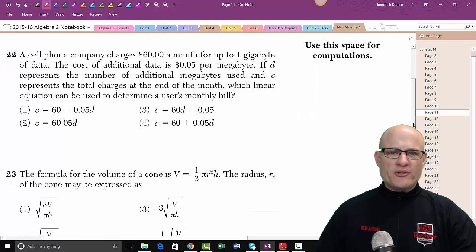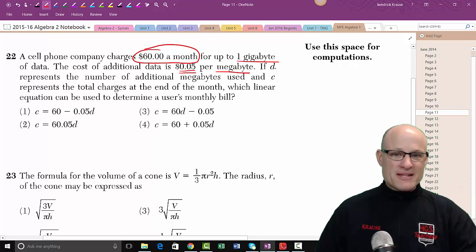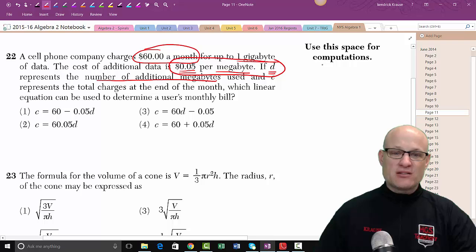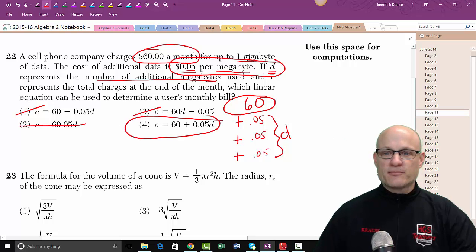A cell phone company charges 60 bucks a month for one gig of data, and five cents per megabyte. D is the number of additional megabytes. So d has to go with the point zero five, because d is the number, and c represents the total charges. You're going to start with 60 bucks a month and you're going to just keep adding and adding. If I go over by one more meg, I add a nickel. If I go over by two megs, I add a nickel, three megs I add another nickel. We're clearly not subtracting, that doesn't even make any sense. What we're going to do is start out with 60 dollars and add however many of these I have, which is clearly this answer.